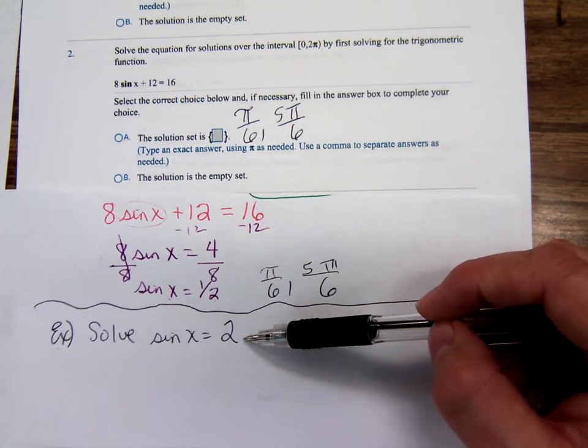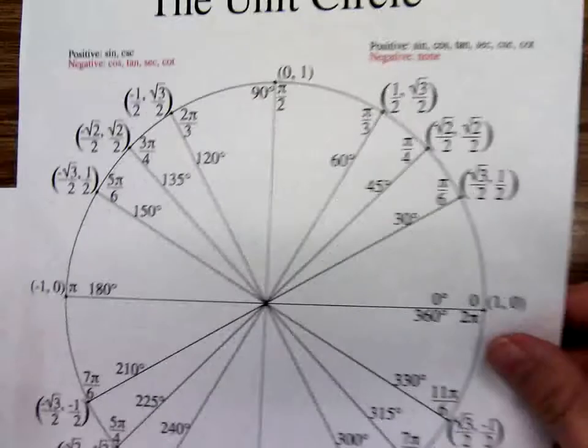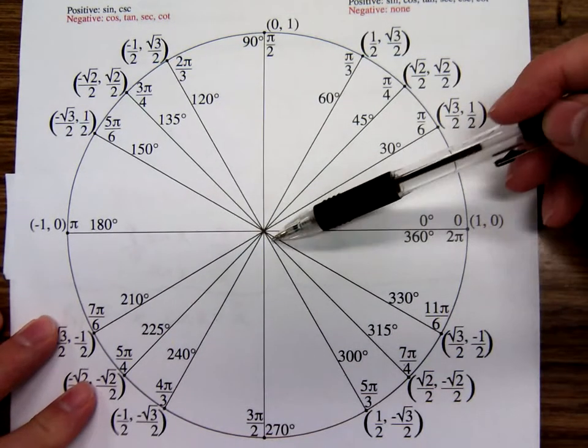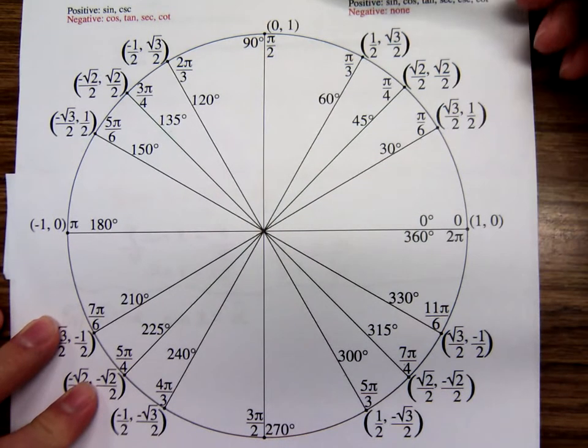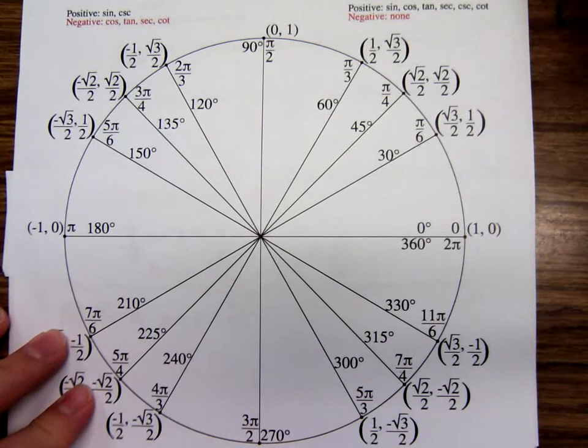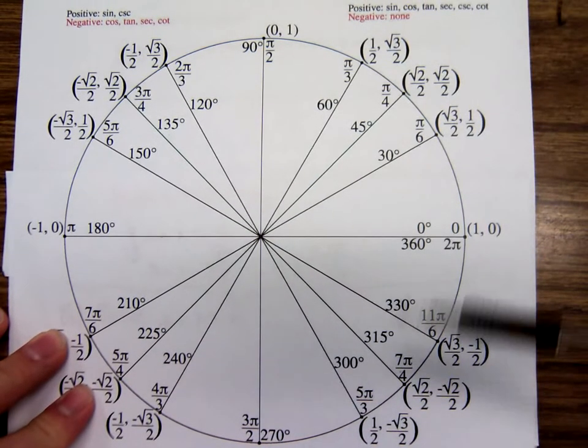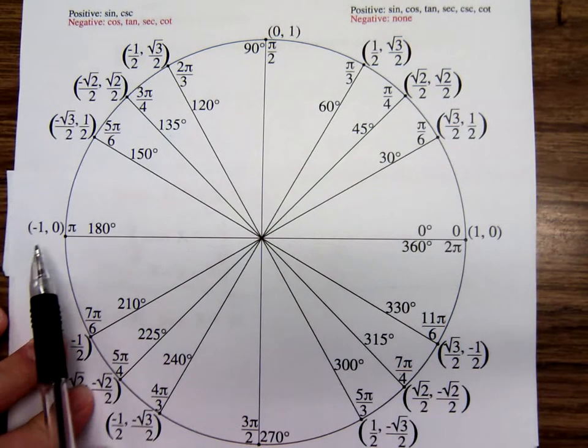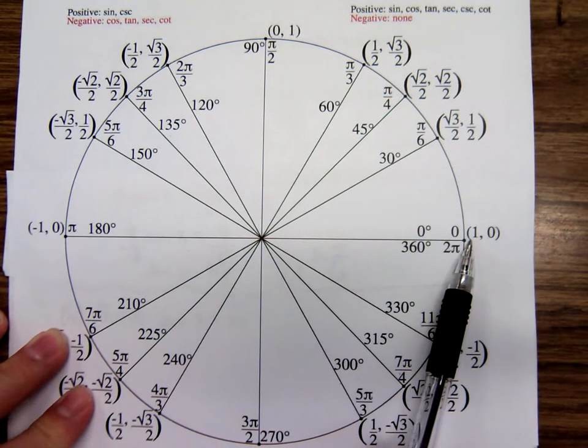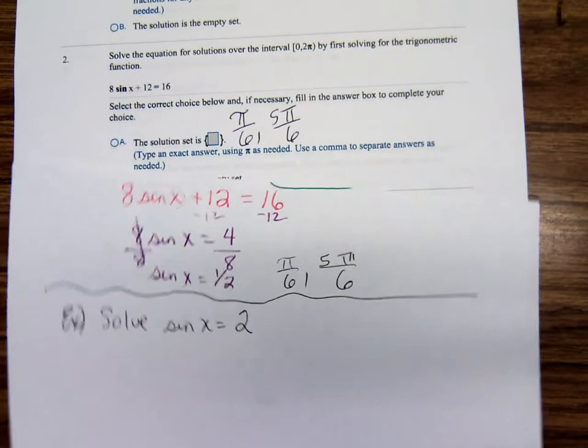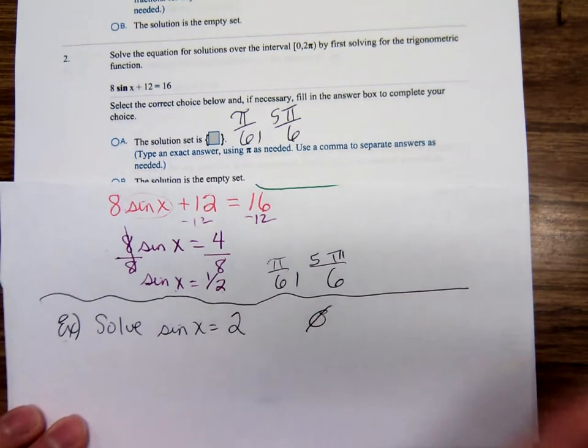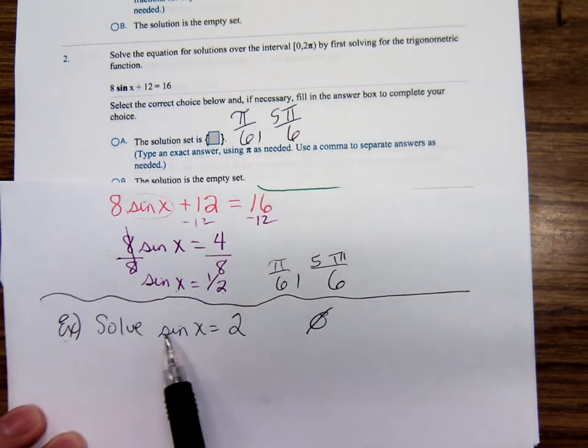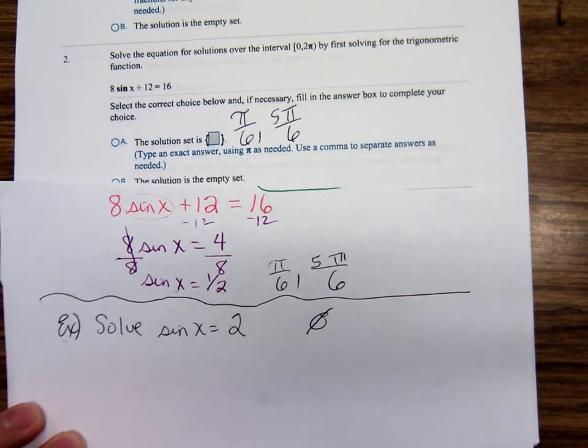Sine x equals 2. Can a circle with a radius of 1 centered at the origin have any points of 2? All the sine values have to be between negative 1 and 1, all the cosine values have to be between negative 1 and 1. So sine x equals 2, that would be one where you'd say empty set. There's nothing special about sine. If it had said cosine x equals 2, it would still be empty set.